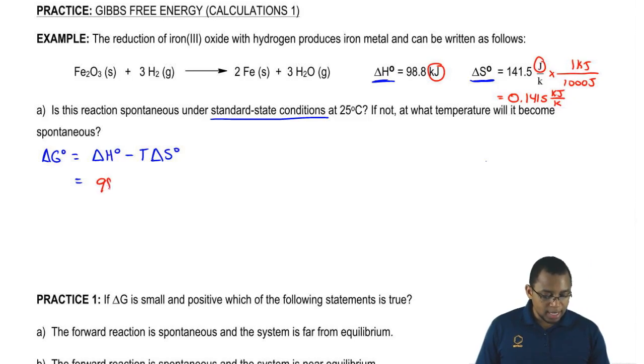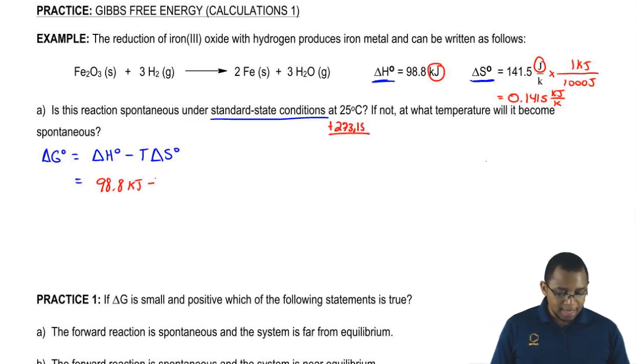We're going to plug in the 98.8 kilojoules minus temperature has to be in Kelvin as well, so add 273.15 to the 25. That gives us 298.15 Kelvin times the delta S value we just calculated. The Kelvins will cancel out, so it will be kilojoules minus kilojoules. When we do that, we get an answer of 56.633 kilojoules.